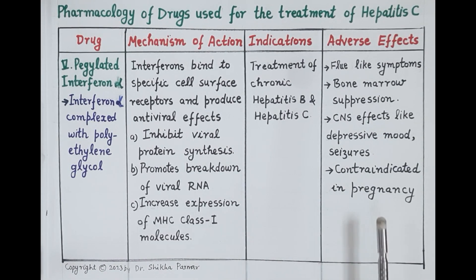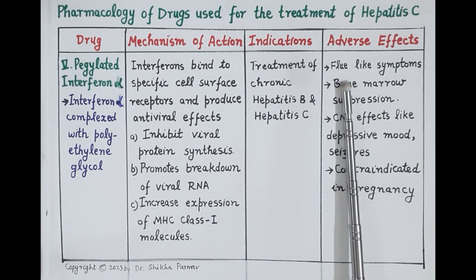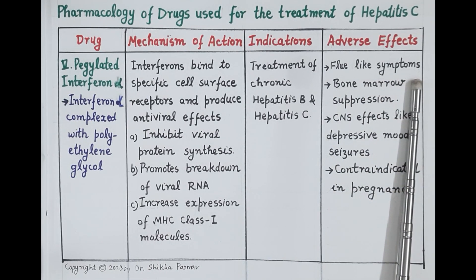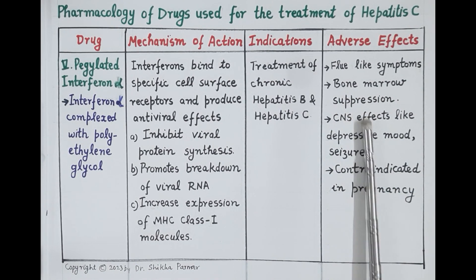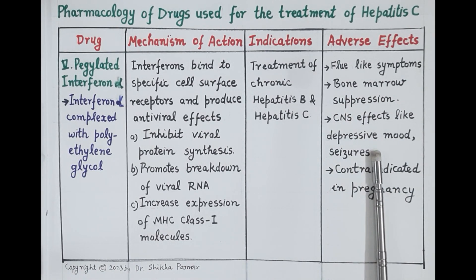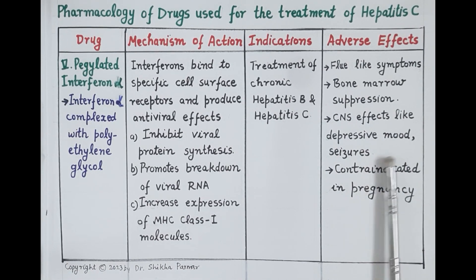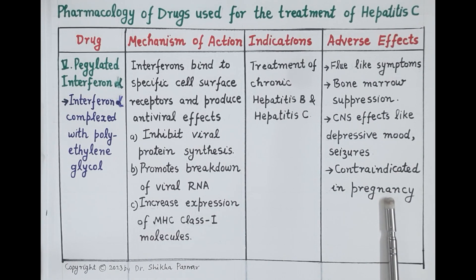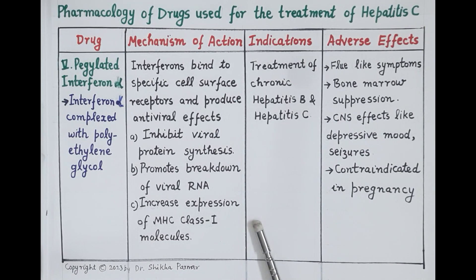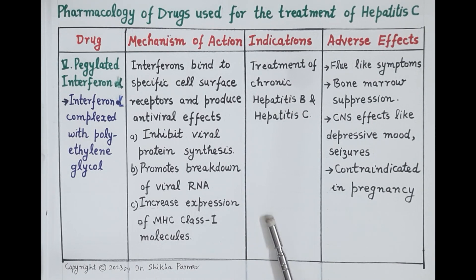Interferon alpha produces adverse effects like flu-like symptoms, bone marrow suppression, central nervous system effects such as depression and seizures. It is also teratogenic and therefore contraindicated in pregnancy. This concludes the pharmacology of drugs used in the treatment of hepatitis C.